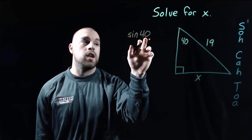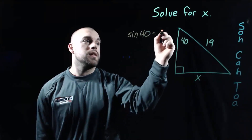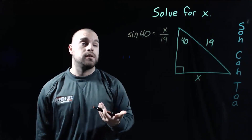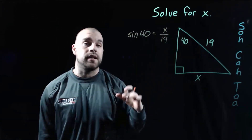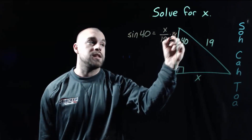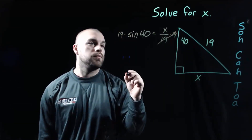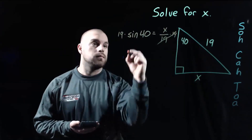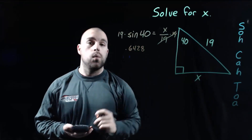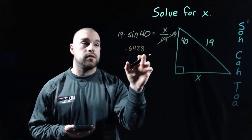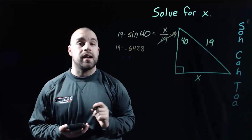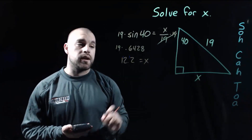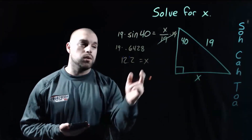So we do the sine of the 40-degree angle equals the opposite side X over the hypotenuse 19. We need to start solving — X is divided by 19, so we multiply both sides by 19. Using the calculator, sine of 40 degrees is 0.6428. Then we multiply by 19, and rounding to one decimal, we get 12.2 as our X value.